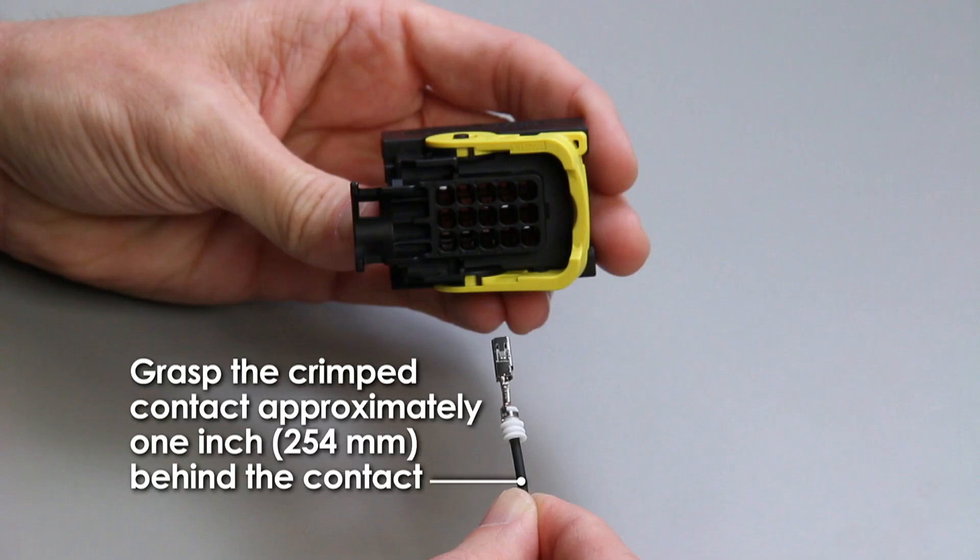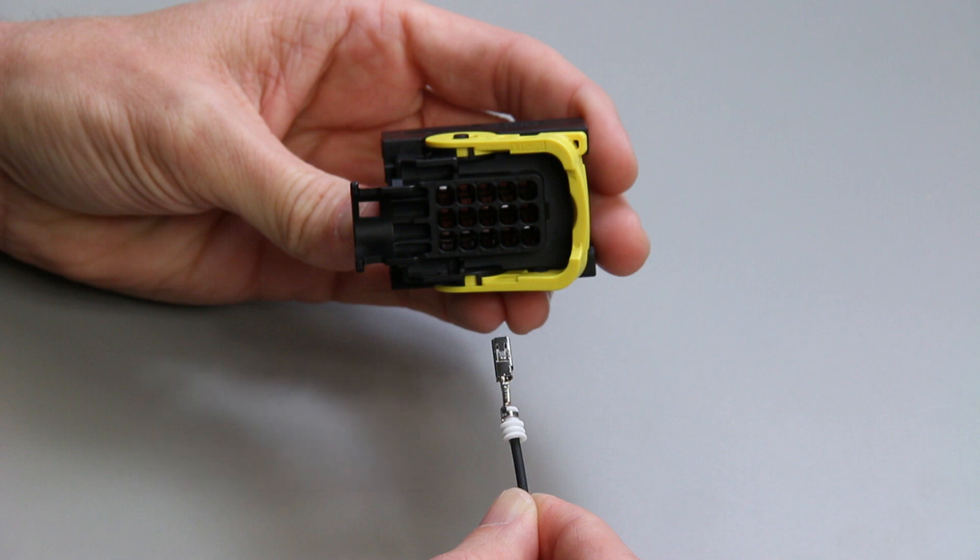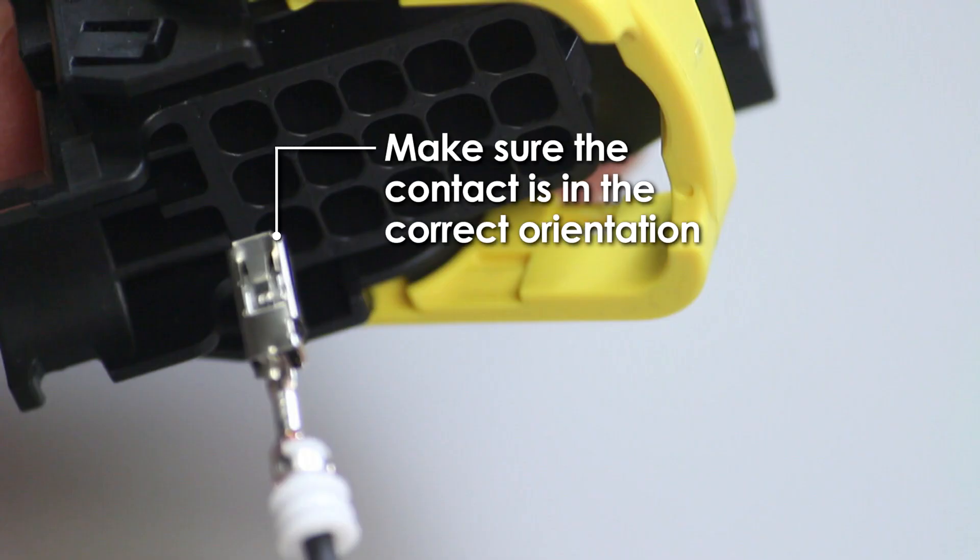Grasp the crimped contact approximately one inch behind the contact. Hold the connector with the rear facing you. Make sure the contact is in the correct orientation.